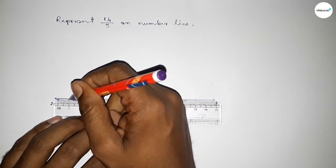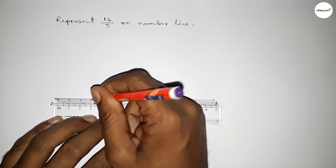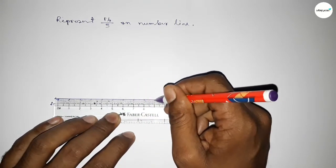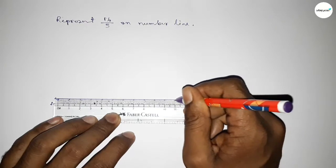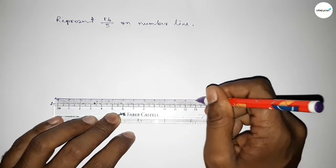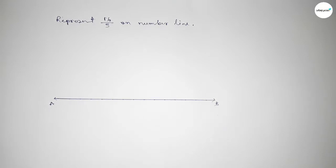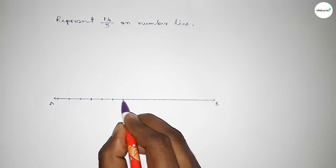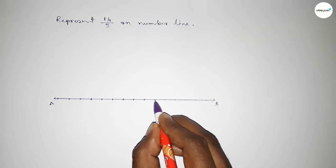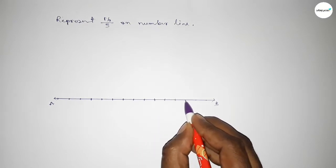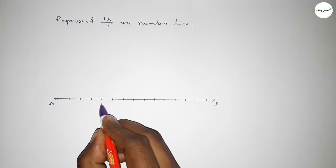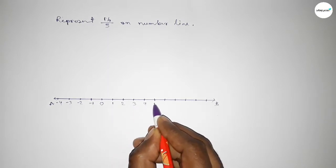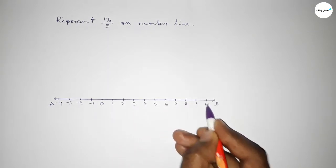Next we have to mark the numbers on the line using a scale, by this way. So marking with deep color to understand perfectly. Now taking here starting number 0, this side minus 1, minus 2, minus 3, minus 4, and this side 1, 2, 3, 4, 5, 6, 7, 8, 9, 10.